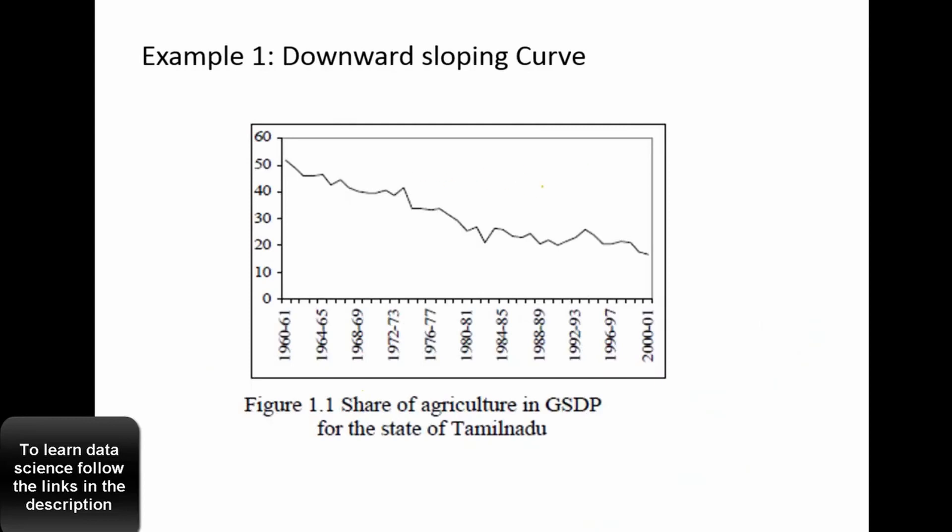So you probably have a downward sloping time series data. We are using the GDP data for one of the states in India, so this is a downward sloping from 1961 to 2001. So you can say downward sloping data for GDP.